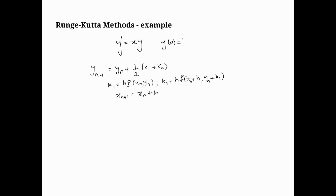Okay, so in this video we're going to do an example of the second-order Runge-Kutta we developed in the last video. So the same problem as we solve for the Euler, y dash equals xy, and you have the initial condition y of 0 equals 1.